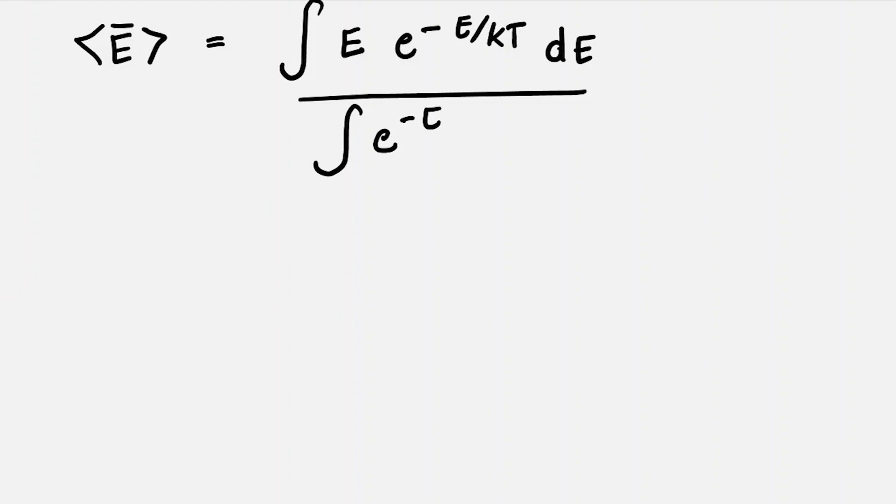We are using integration to find out the total energy of the system, and through this we are going to find out the average energy of a harmonic oscillator. It's a simple integration where we have to use integration by parts.